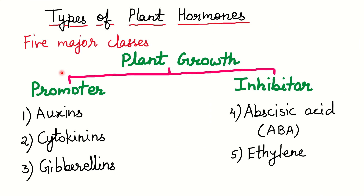Now, the types of plant hormones. There are five major classes: auxins, cytokinins, gibberellins, abscisic acid (ABA), and ethylene. The first three — auxins, cytokinins, and gibberellins — are plant growth promoters. Abscisic acid and ethylene are plant growth inhibitors.